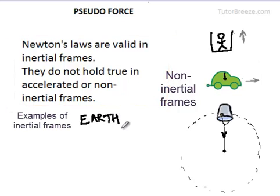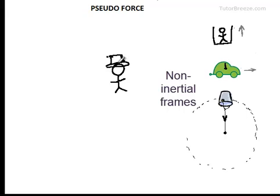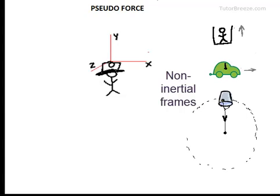The Earth is taken as a good enough inertial frame. A car moving at constant velocity — not accelerating — can also be taken as an inertial frame. All frames that are accelerating are non-inertial frames. To visualize a reference frame, you can think of a person wearing a special hat that has x, y, and z axes attached to it. This is his reference frame, and all distances are measured with respect to these axes with O as the origin.